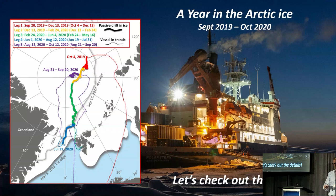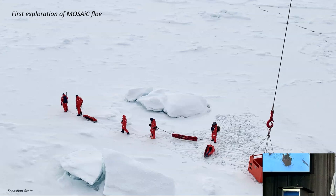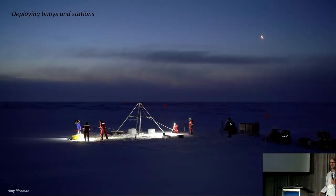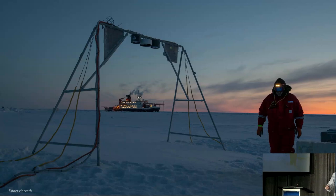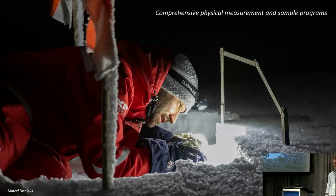We got all the way across the Arctic into the Fram Strait by the end of July, and we didn't want to go home, so we took the ship back up near the North Pole to end out the year. Once we found a suitable ice floe, we started setting up all kinds of equipment out on the sea ice — buoy stations looking at the ocean, the ice, the atmosphere. We set up areas called Met City, Ocean City, Balloon Town — different areas for different types of research.